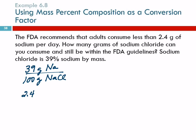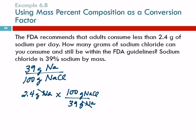So, starting with 2.4 grams of sodium — I want grams of sodium chloride on top and grams of sodium on the bottom, because I want the units to cancel out. Grams of sodium is 39 on the bottom, and 100 is on the top. So I've got 2.4 times 100 divided by 39, and I'm going to come up with 6.2 grams of sodium chloride.